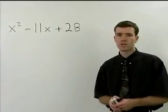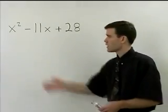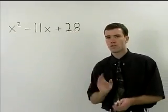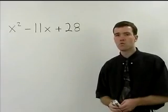The trinomial in this problem is in the same form as the one in the previous example. You've got an x squared term, an x term, and a constant term. So you can try to factor it in the same way as the product of two binomials.